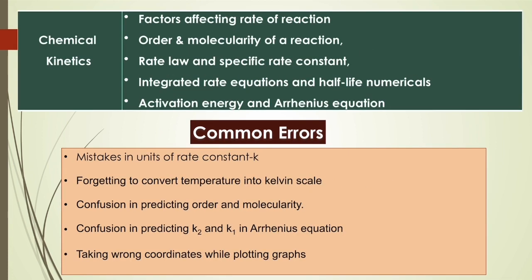Coming to Chemical Kinetics, the most important areas are order and molecularity, rate law and rate constant, and numericals related to the integrated rate equation, half-life period, and activation energy. Mistakes are generally committed in writing the units of the rate constant. Students often forget to convert temperature into the Kelvin scale, especially in the Arrhenius equation. They also have confusions in predicting order and molecularity, get confused in the values of K₂ and K₁ in the Arrhenius equation, and take wrong coordinates while plotting graphs.